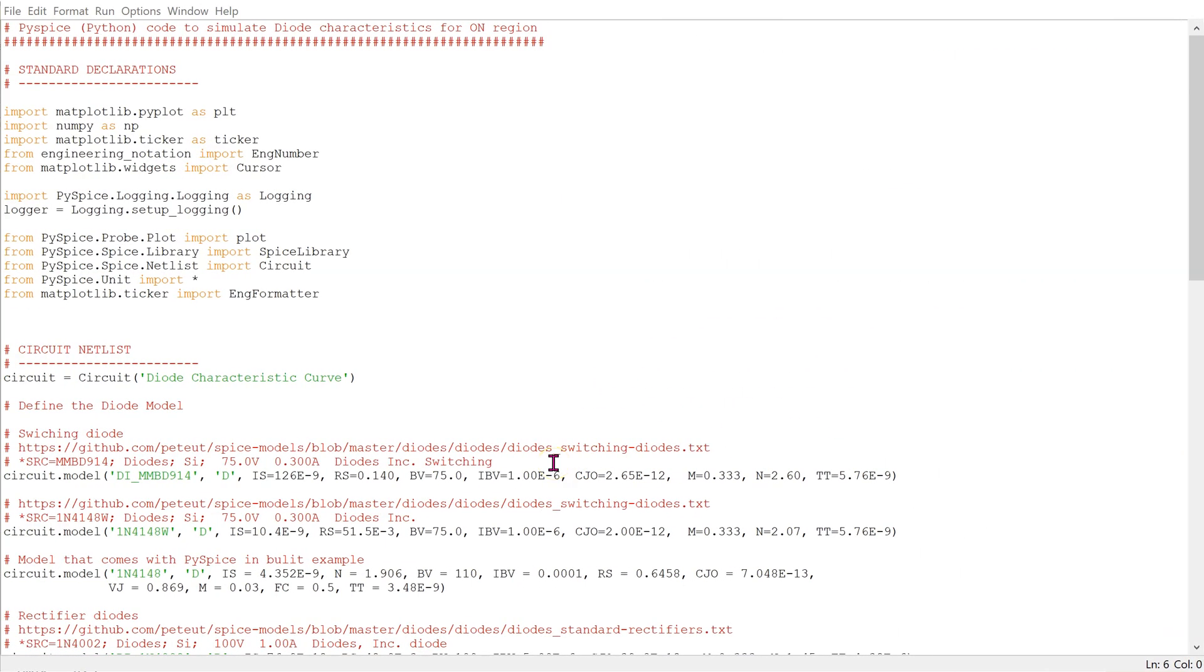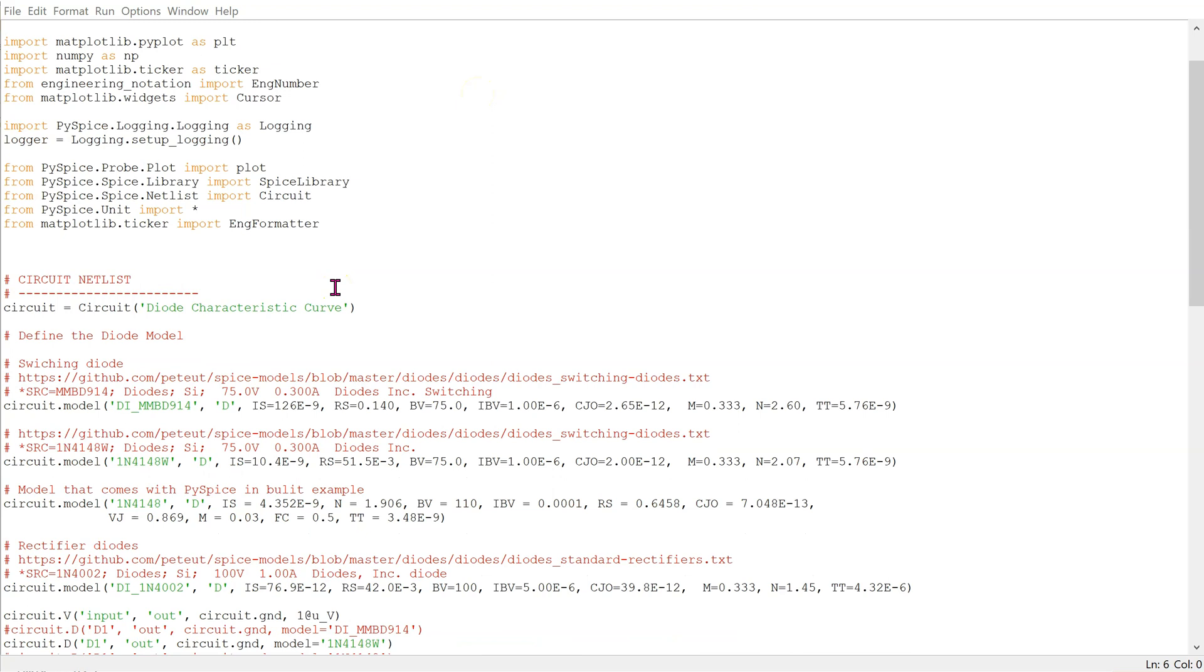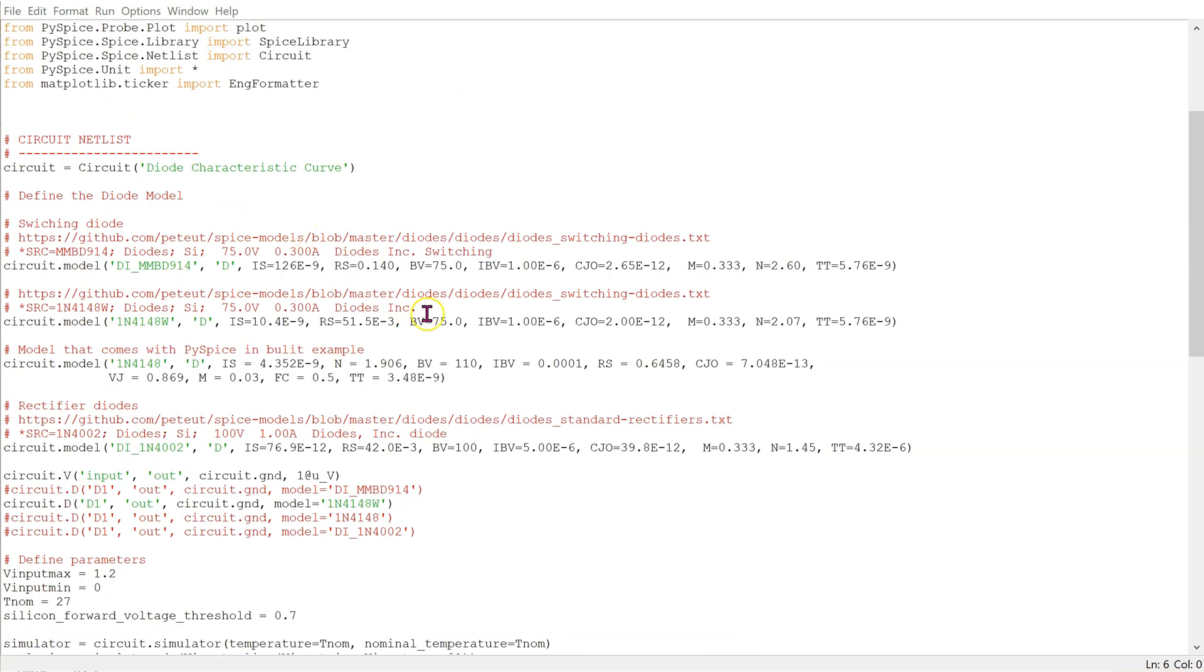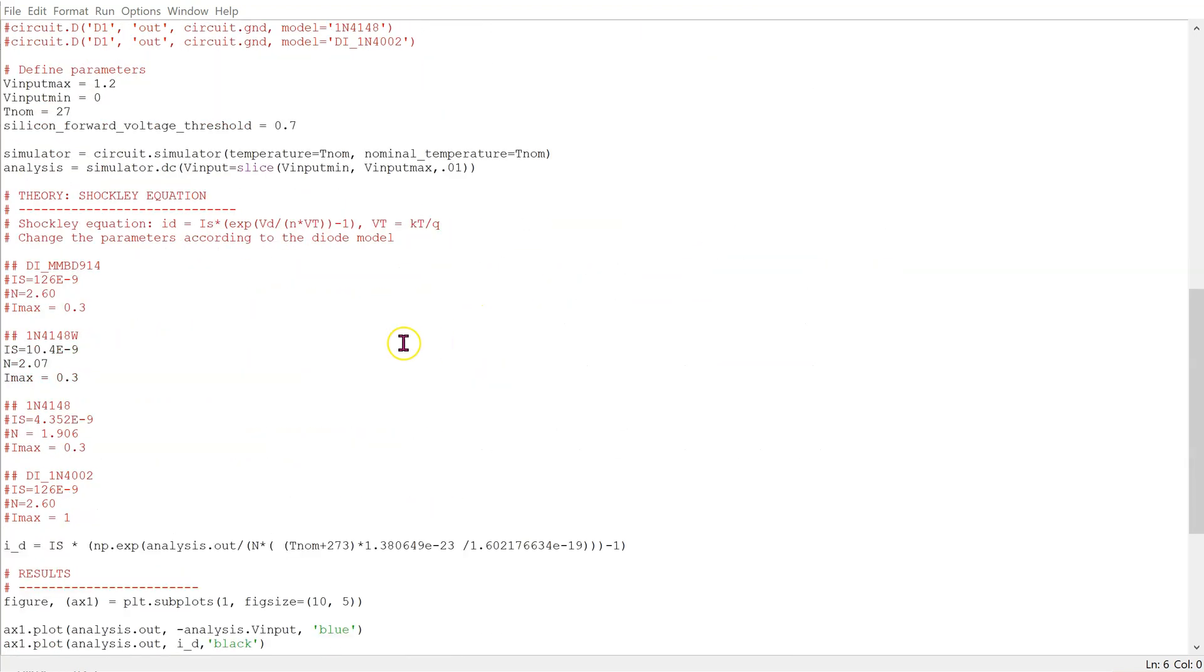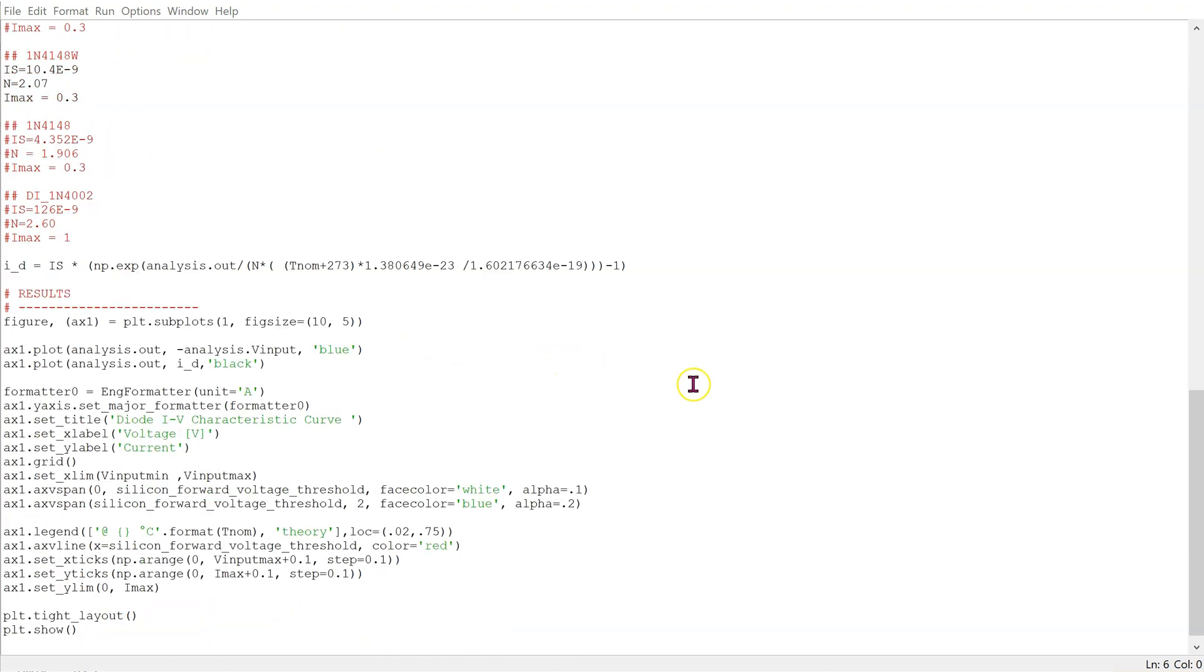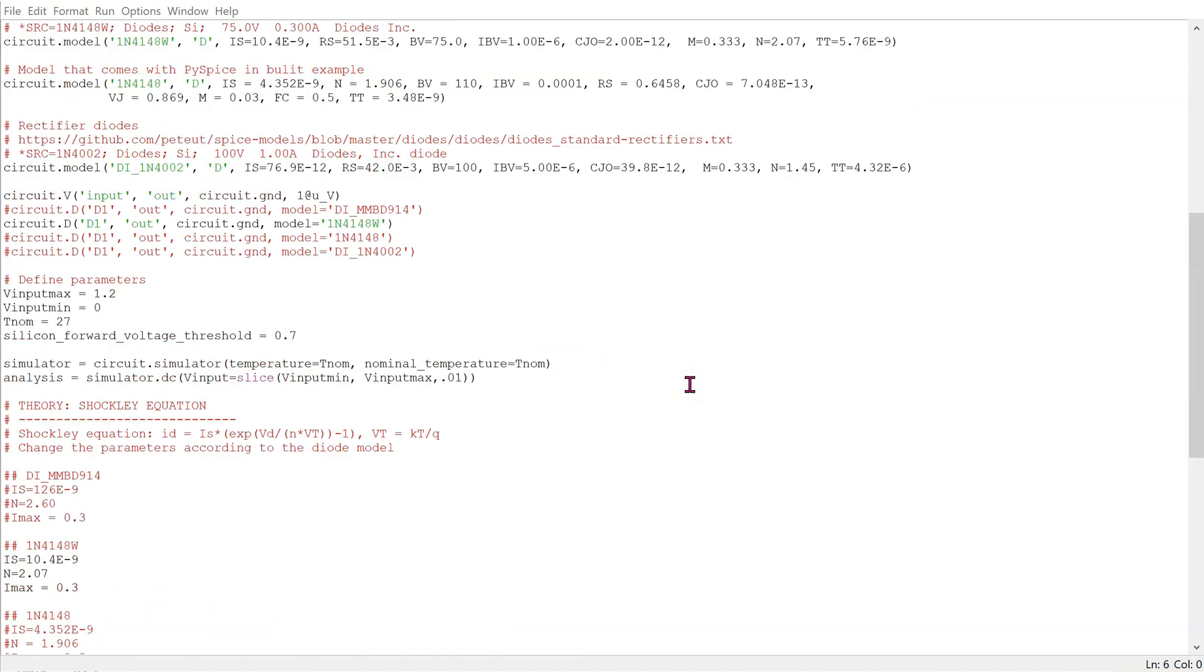This is the complete Python code to simulate the diode characteristics for the ON region. We have standard declarations at the top, followed by the circuit netlist. We calculate the Shockley equation using the actual diode model parameters. And finally, we have the plotting and formatting commands.